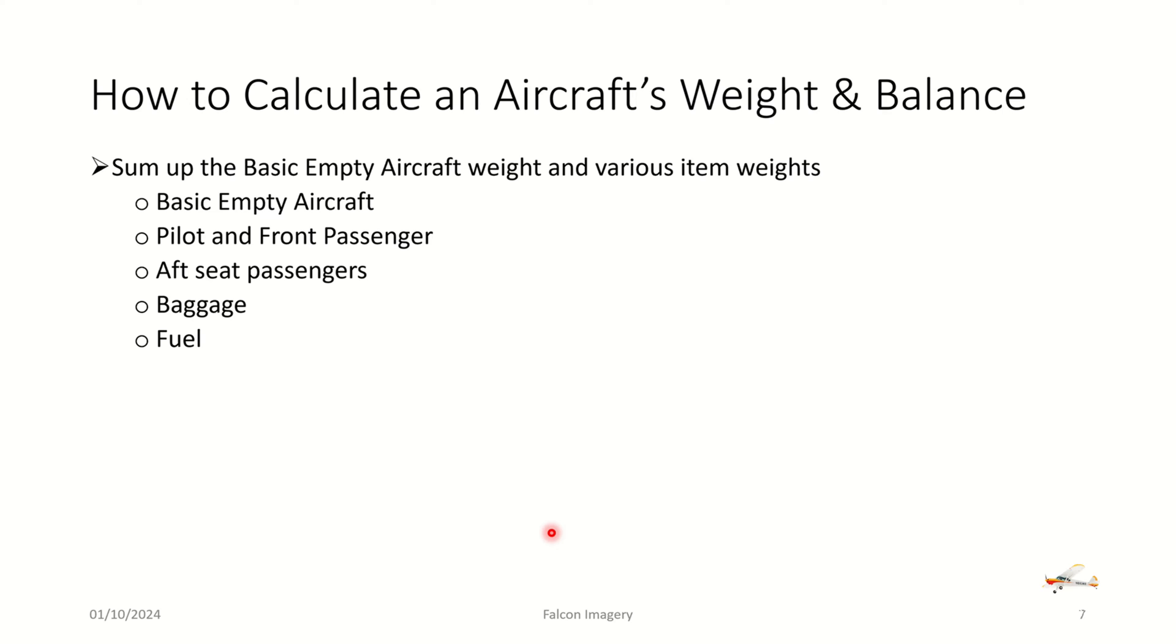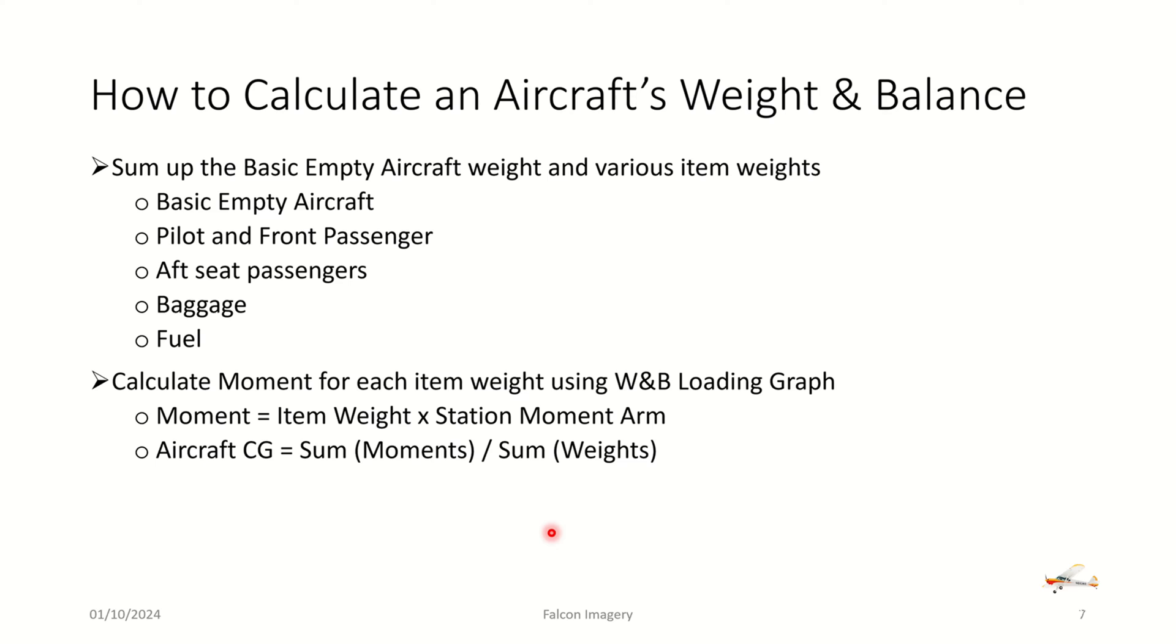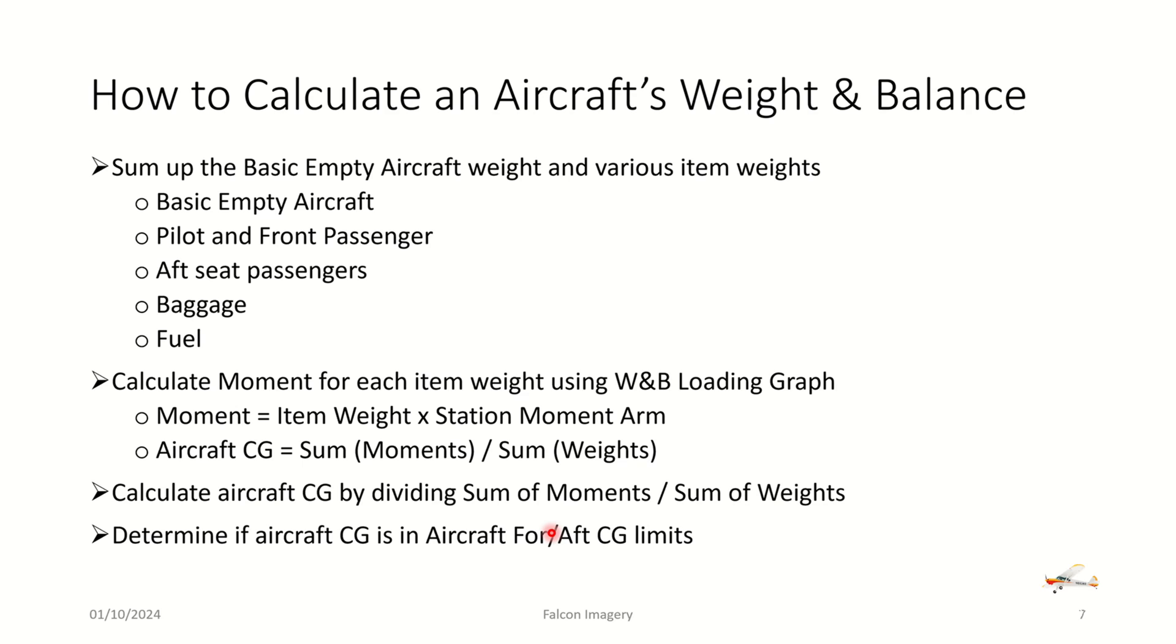So in order to calculate the weight and balance of the aircraft, we need the weights for the various items that are going to be on the plane, as well as the empty weight of the plane. And again, we need to either plan to use a calculator to do some multiplication and division, or we can also take advantage of any weight and balance loading graph tables that may be available in the pilot operating handbook. We'll calculate the aircraft CG by dividing the sum of all the moments by the sum of all the weights. And then once we've determined the CG, we can look at the moment envelope information in the pilot operating handbook and plot our CG point in that moment envelope for the CG limits to see if we are indeed within the safe operating range of the aircraft.